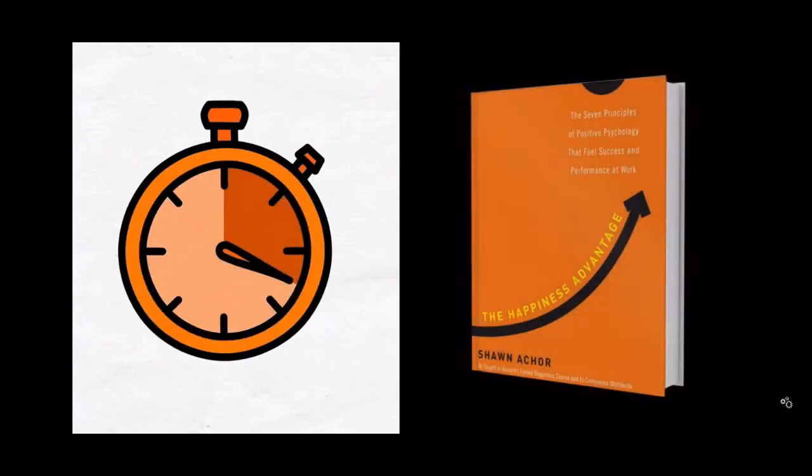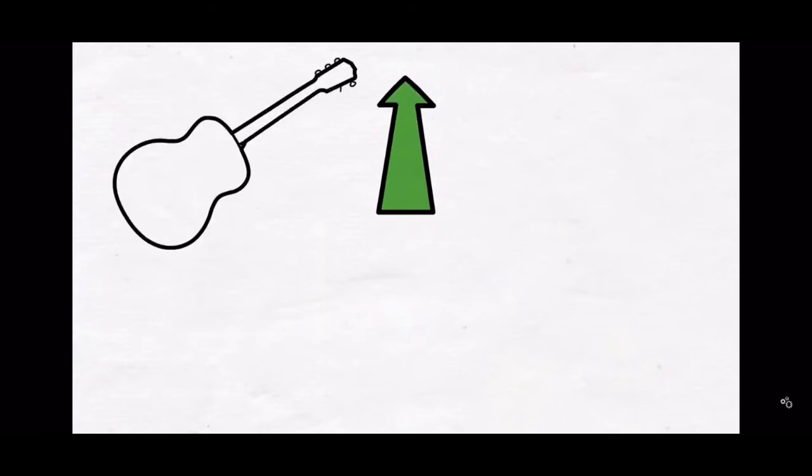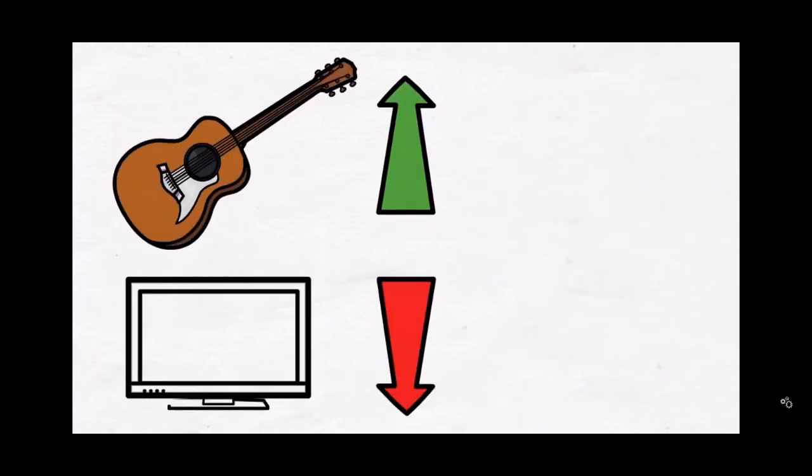In his book The Happiness Advantage, Sean Aker describes his own struggle with behavior change. Sean had a very clear goal. He wanted to practice his guitar more often, while reducing the amount of time he spent watching TV.